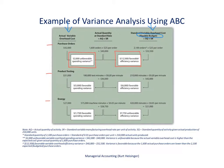The actual costs for purchase orders totaled $42,000. The flexible budget indicates we expected to see costs of $52,500 based on the actual level of sales and production. We expected to use 2,100 purchase orders — that's the standard quantity of purchase orders per unit times the number of units actually produced, as shown in the footnote. In fact, we used the actual quantity of 1,600 orders, and the standard rate is $25 per order for both columns. Therefore, we issued fewer purchase orders than expected, resulting in a favorable efficiency variance of $12,500.